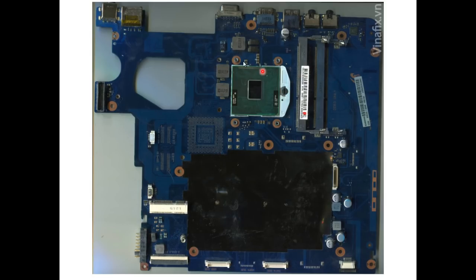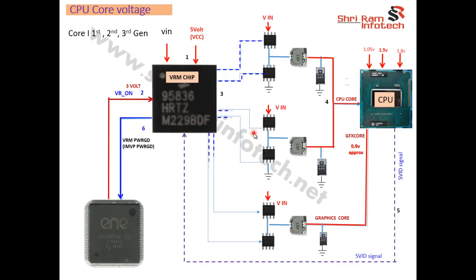If the CPU core voltage is not present at the coil, first check the VIN voltage (18V adapter voltage) and the VCC voltage (5V) at the VRM chip. If these are present, then check the VR_ON signal at the VR_ON pin of the VRM chip. If the VR_ON signal is missing, trace where it comes from — in Compel and Quanta motherboards it comes from the SIO, but in Vistron and Foxconn motherboards it is generated by different circuitry.